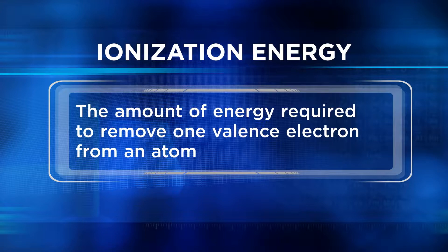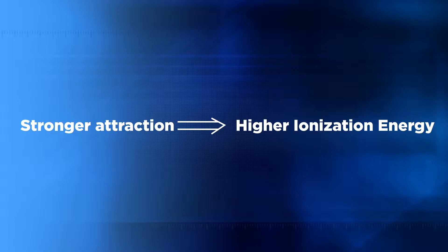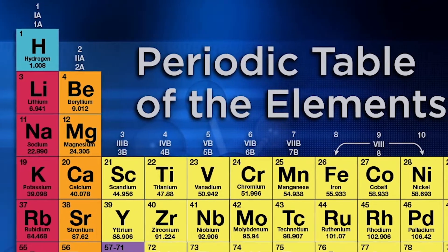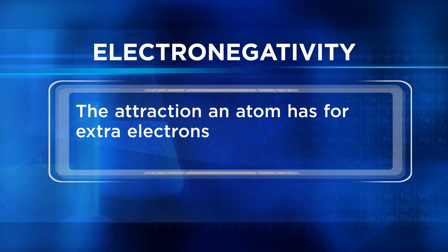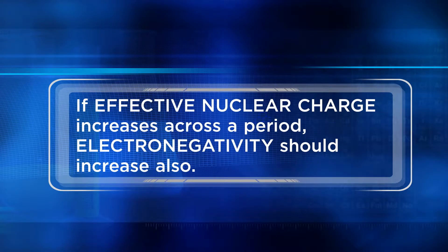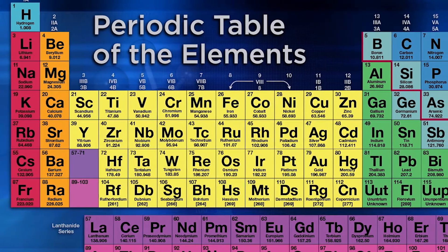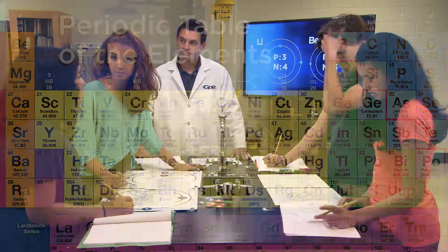Let's do ionization energy first — that's the energy you need to remove a valence electron. The stronger the attraction between the valence electron and the nucleus, the higher the ionization energy. In that case, attraction gets stronger left to right, so ionization energy must get higher left to right. Now let's figure out electronegativity. Electronegativity is the attraction an atom has for extra electrons. So if effective nuclear charge increases across a period, electronegativity has to increase too — it's the effective nuclear charge that's going to attract extra electrons. So we'll say that electronegativity increases moving from left to right across a period. Atomic size is supposed to be tricky — let's see if we can figure it out. Don't you think atoms get larger across a period because you're adding electrons?